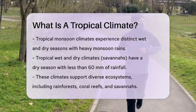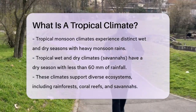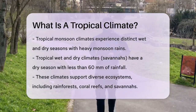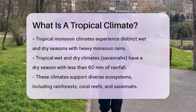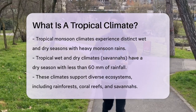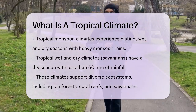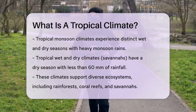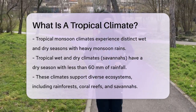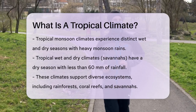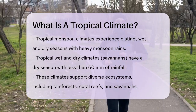In other types of tropical climates, like the tropical monsoon climate, the rainfall is seasonal. There are distinct wet and dry periods, with the wet season often bringing heavy monsoon rains. The tropical wet and dry climate, or tropical savanna, has a dry season with less than 60 millimeters of rainfall in the driest months.